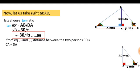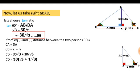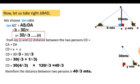From equations 1 and 2, the distance between the two persons CD equals CA plus DA, so CD equals X plus Y equals 30 root 3 plus 30 over root 3. Simplifying, CD equals 40 root 3 meters. Therefore, the distance between the two persons is 40 root 3 meters.